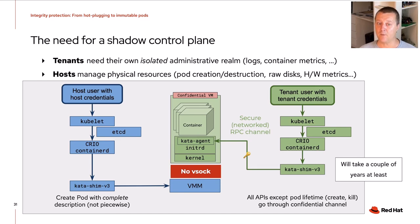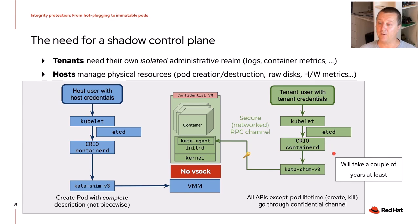This leads to the need for a shadow control plane. Tenants now need their own isolated administrative realm for things like getting logs, container metrics, and so on, that the host should not be able to see. The host is still needed to manage physical resources like pod creation, destruction, raw disks, and hardware metrics. This means you now need two sets of credentials: host credentials for physical resource access, and tenant credentials for what's inside the virtual machine. Getting there will clearly take a couple of years because we need to dispatch the APIs — ideally hidden in tools like kubectl or OC for OpenShift, which would dispatch using one set of credentials or the other depending on the command being used. That's a lot of work and going to take a long time.